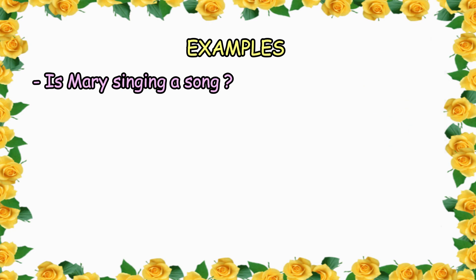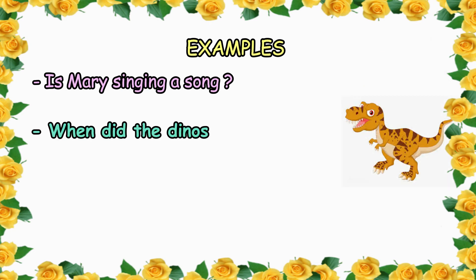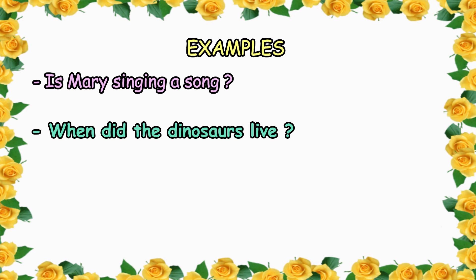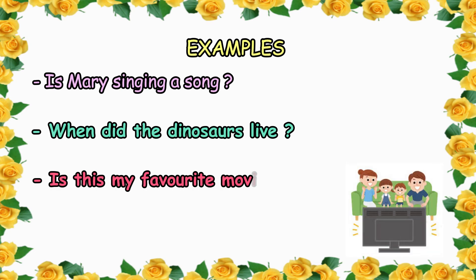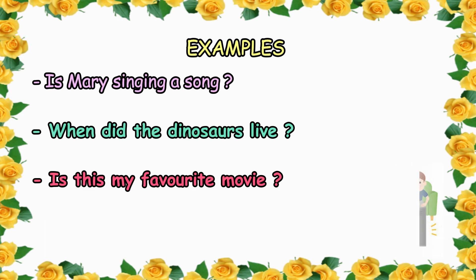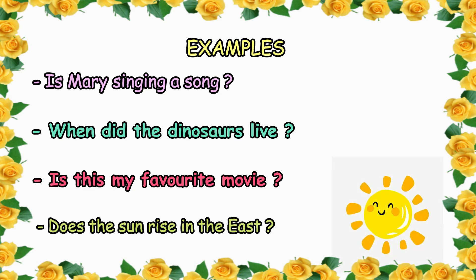Let's check out the examples. Is Mary singing a song? — this is an interrogative sentence because we are asking about Mary. Or: when did the dinosaurs live? — this is again interrogative because we are asking something about dinosaurs. Or: is this my favorite movie? Or does the sun rise in the east? So these all are examples of interrogative sentences.